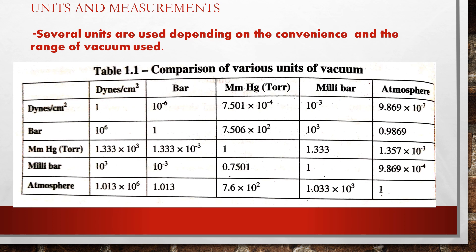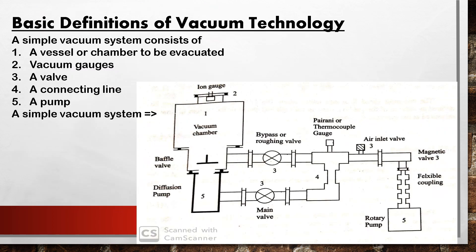A simple vacuum system consists of some basic components. These include a vessel or chamber to be evacuated, a vacuum gauge, a valve, a connecting line, and a pump. Together, all of these constitute a simple vacuum system.